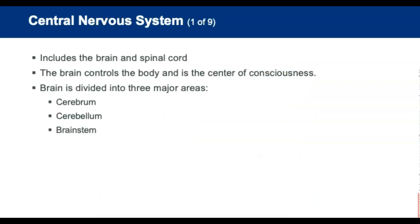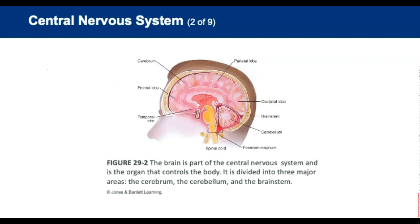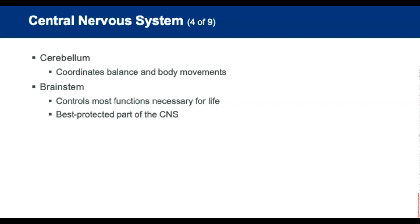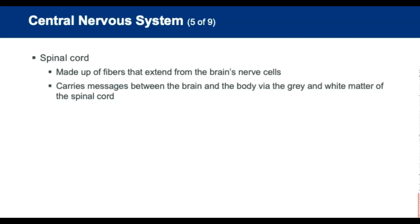The central nervous system includes the brain and spinal cord. The brain controls the body and is the center of consciousness. The brain is divided into three major areas: the cerebrum, cerebellum, and brainstem. The cerebrum controls a wide variety of activities, including most voluntary motor function and conscious thought. It contains about 75% of the brain's total volume and is divided into two hemispheres and four lobes. The cerebellum coordinates balance and body movements. The brainstem controls most functions necessary for life, including cardiac and respiratory systems and nerve function transmissions. It's the best protected part of the central nervous system.